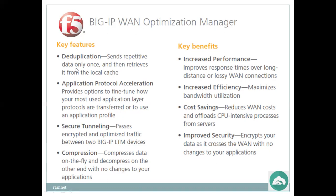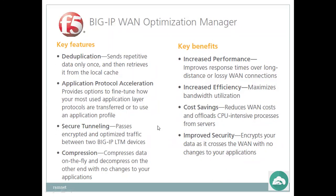Application protocol acceleration provides options to fine tune how your most used application layer protocols are transferred or to use an application profile. Secure tunneling passes encrypted and optimized traffic between two BIG-IP WOM devices. Compression compresses data on the fly and decompresses on the other end with no changes to your applications. Key benefits: increased performance improves response times over long-distance or lossy WAN connections; increased efficiency maximizes bandwidth utilization; cost savings reduce WAN costs; improved security encrypts data crossing the WAN.